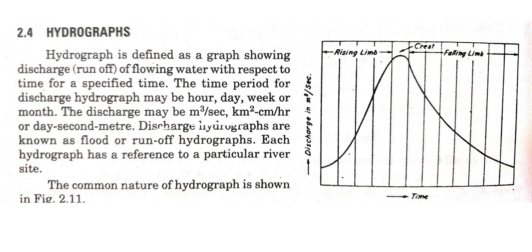In a hydrograph, the x-axis is time and the y-axis is discharge in cubic meters per second. At the top of the graph is the crest; the left side is the rising limb and the right side is the falling limb.